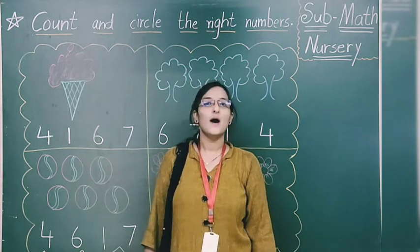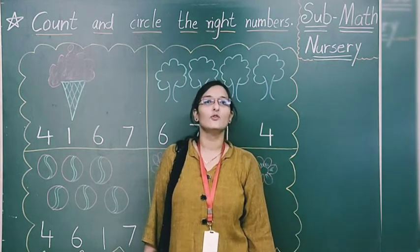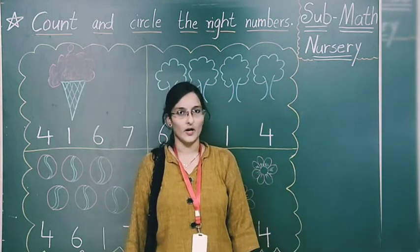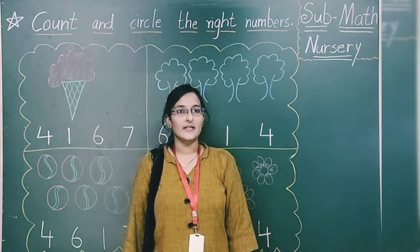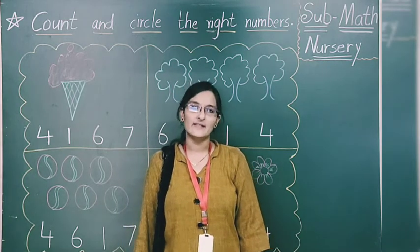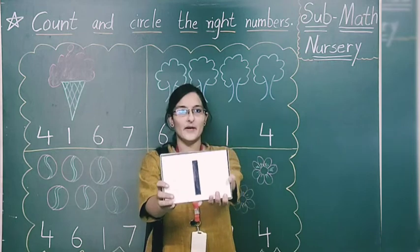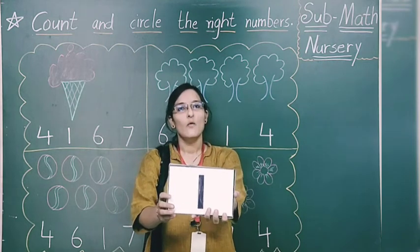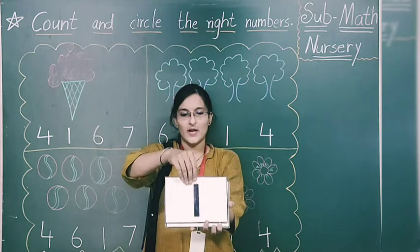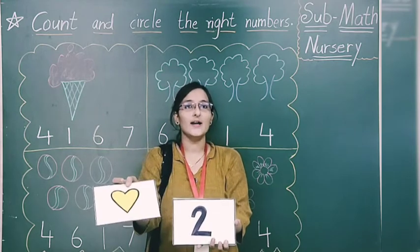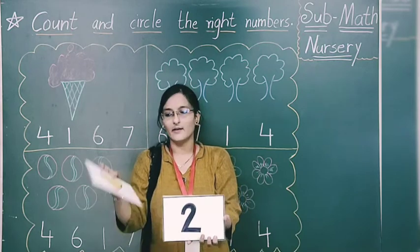You can see on board. But before doing this, we have to repeat the numbers from 1 to 10. I will read and you have to repeat the same. Look at here. Which number is this? Number 1. You can see over here — how many are? Only 1. Repeat it with me: 1.